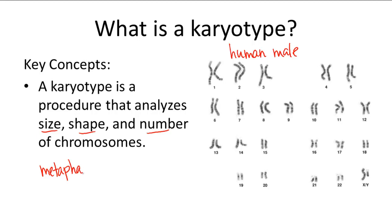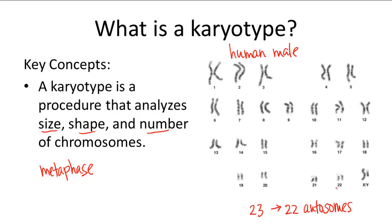Metaphase is used because this is the phase when DNA is fully condensed into chromosome form. You can see in this human karyotype that we have 23 pairs of chromosomes — 22 of which are autosomes, which just means they aren't sex chromosomes.